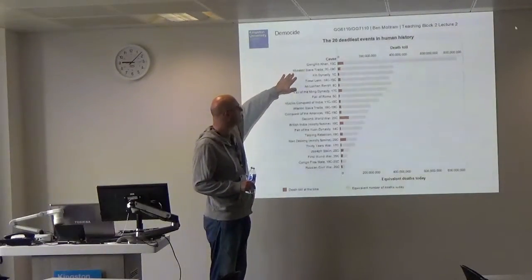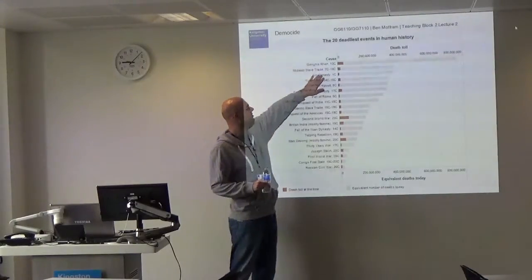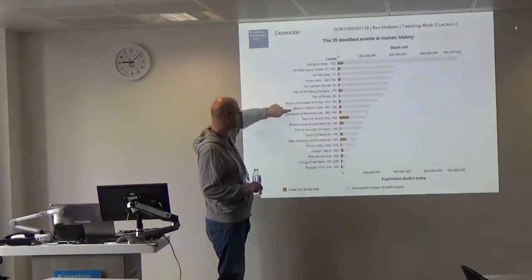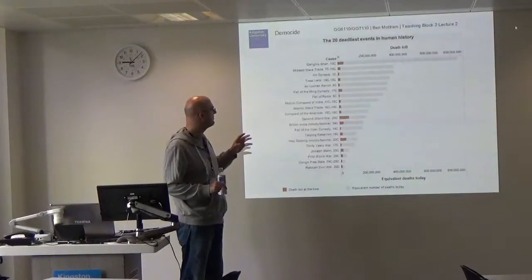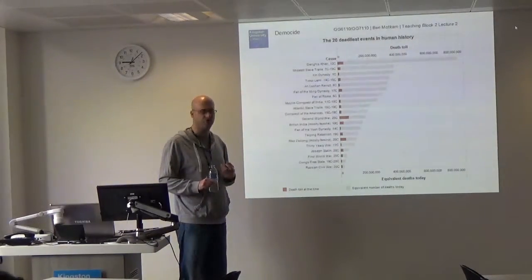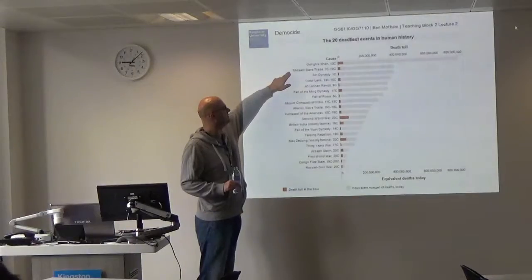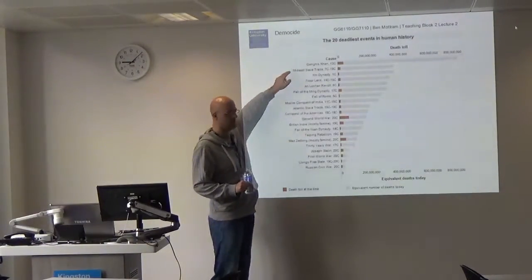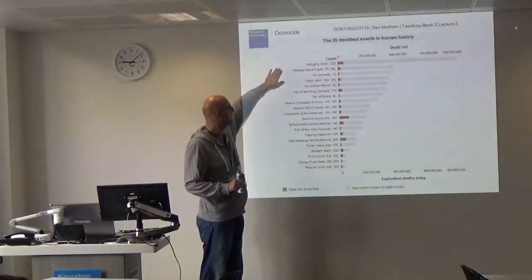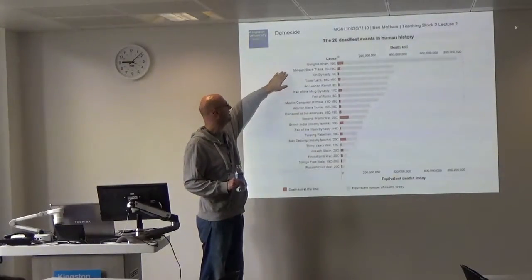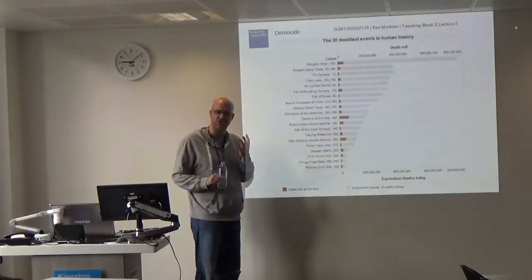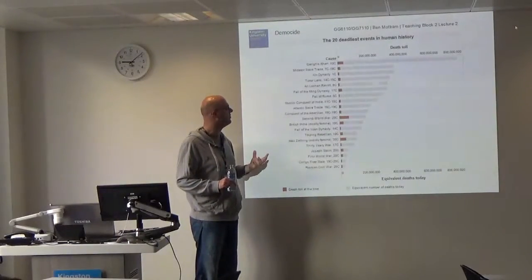The next one down is the Middle East slave trade, which went on for a very long period of time. Unlike the Atlantic slave trade, the Middle East slave trade had a slightly different flavour — they wouldn't just take chattel slaves but also indoctrinated people into their armies. Very famously the Ottoman Empire used to take young Christian boys from the Balkans and Slavic areas — the word 'slave' etymologically comes from the word 'Slav' — and indoctrinate them into a group called the Janissaries, who were religious warriors for the Ottoman Empire.